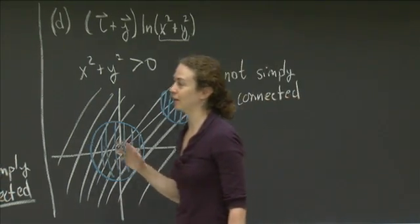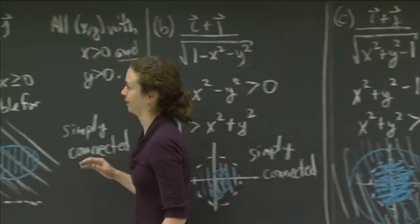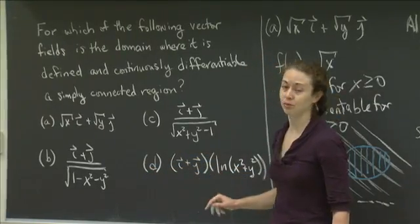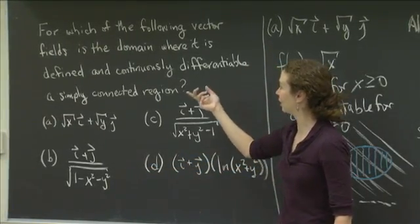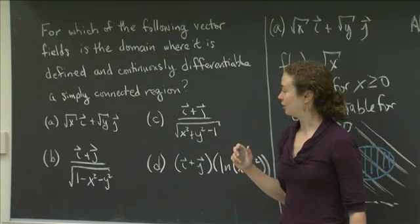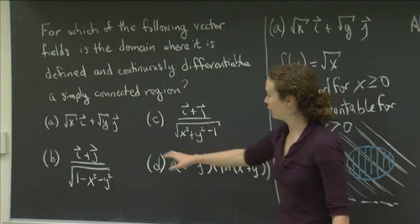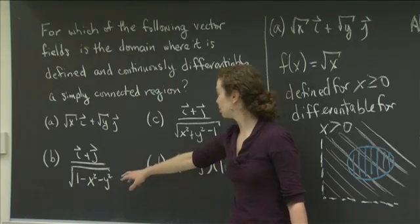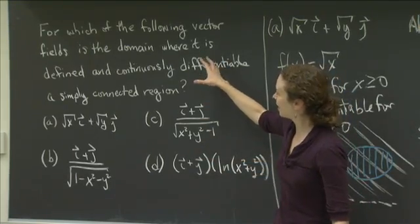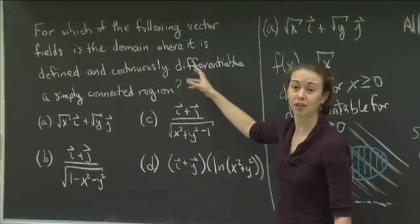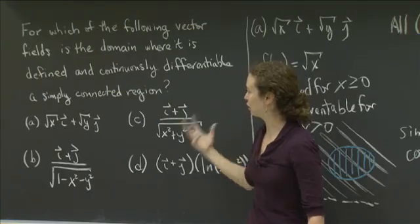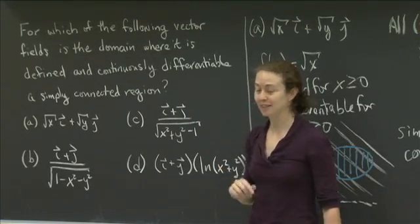To summarize: we had four vector fields, and we did two things for each — found the domain where they were defined and differentiable, then determined if those regions were simply connected. Two examples had simply connected regions, and two did not. Hopefully this was informative for understanding that vector fields are not always defined everywhere, and for understanding what the term 'simply connected region' actually means.